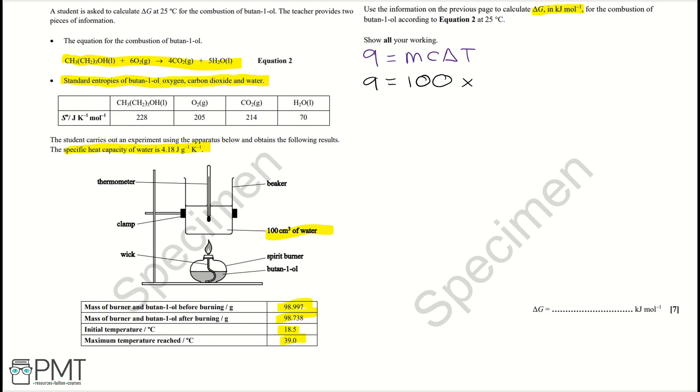And then we're going to multiply by 4.18, which is the specific heat capacity of water, or C. And then multiply by delta T, which is equal to 39 minus 18.5. And that's going to give us a Q value of 8,569 joules. And that equals 8.569 kilojoules.